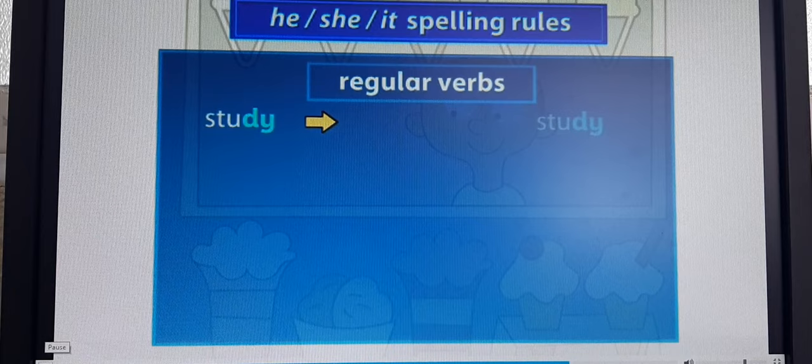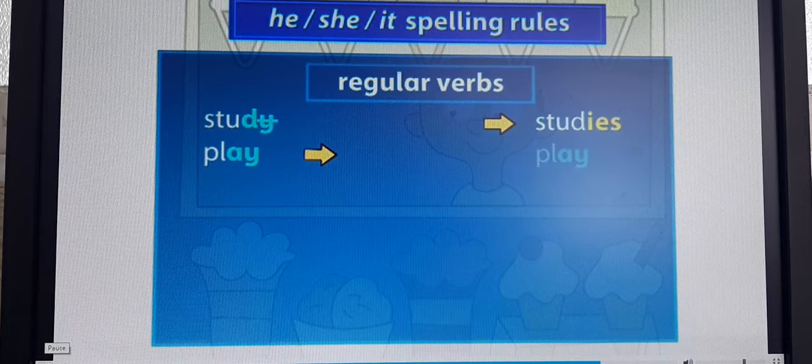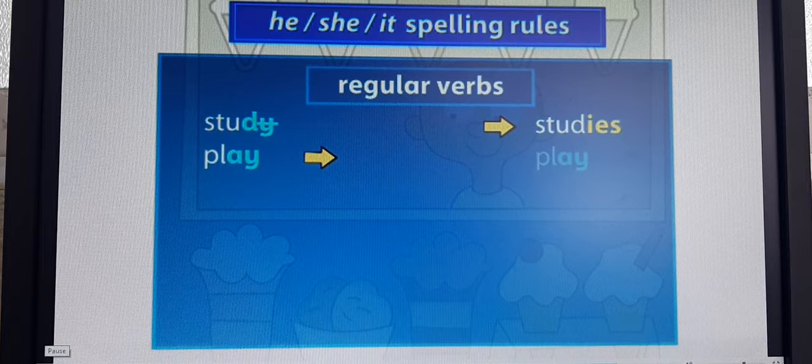We change verbs ending in y to i-e-s after a consonant. We don't change y to i-e-s after a vowel.